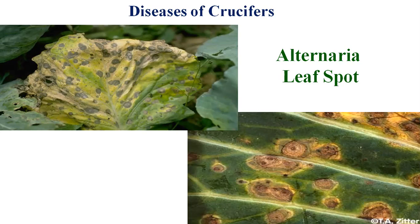The primary source of infection is infected seeds, plant debris, and also weeds, which act as collateral hosts for the primary source of infection. The secondary source of infection is conidia disseminated by wind.